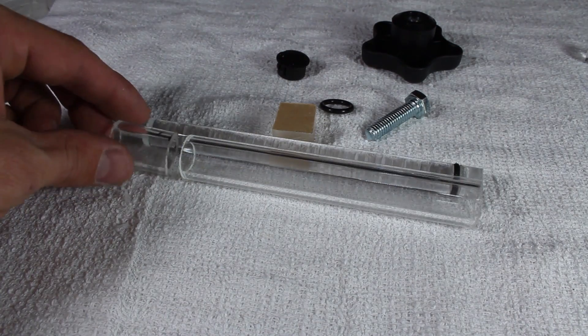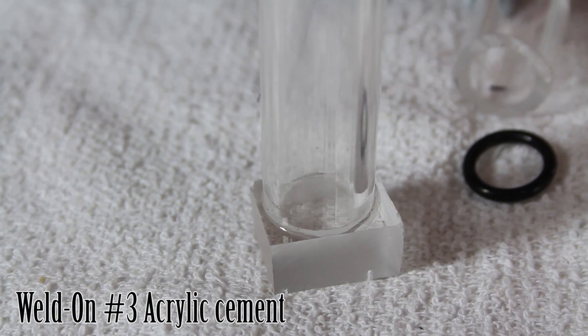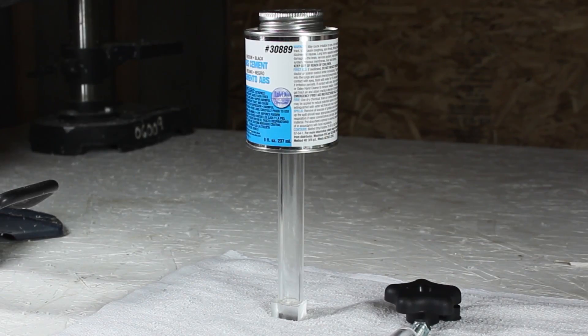I've got all my pieces cut to length, so now I'll remove the protective paper from this little square and carefully cement it to one end of the tubing. This will need to be an airtight seal, and I'm hoping this weight on top will help.